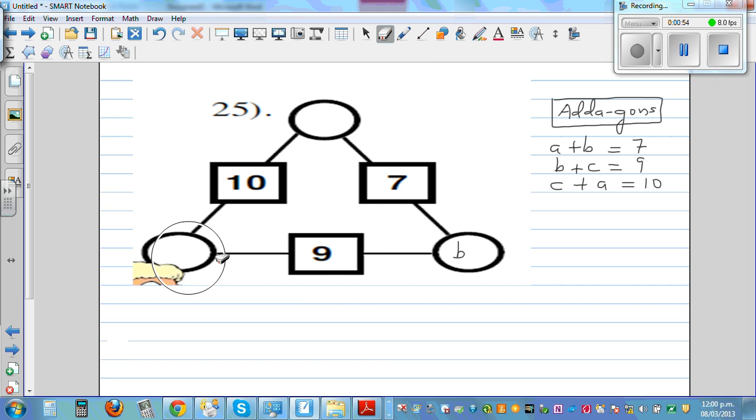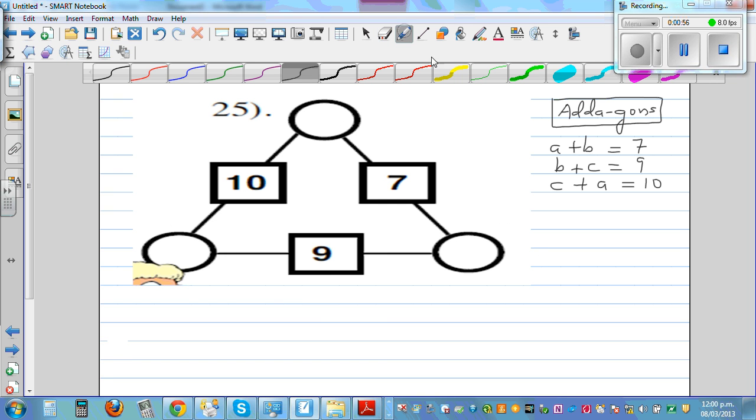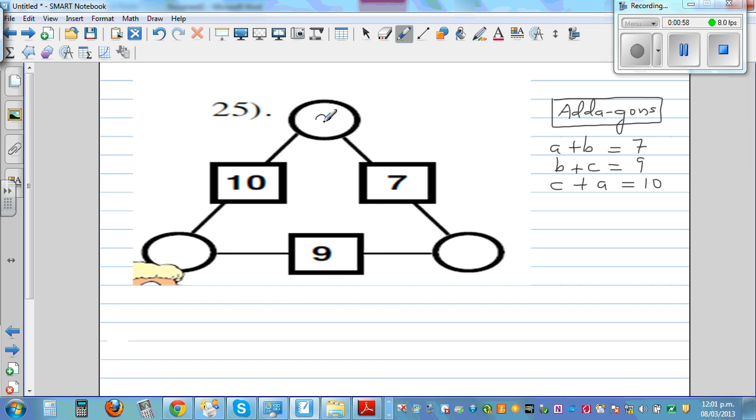So let's think of two numbers that adds to 7. So let's start with 2 and 5. So if you go 2 and 5, 2 and 5 gives you 7. If you write 5 here, 5 plus what gives you 9? 4. But 4 plus 2 is not 10. So this is not right.